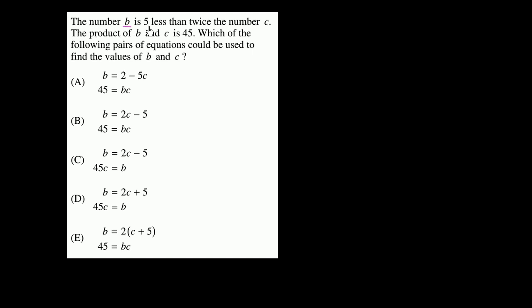The number b is 5 less than twice the number c. Let me write that down. So b is equal to 5 less than twice the number c. So that's 2 times c minus 5. It's 5 less than 2 times the number c.